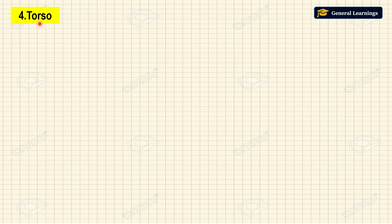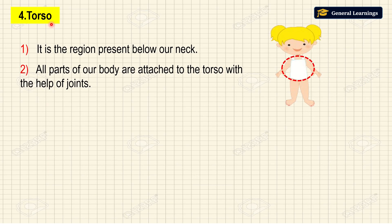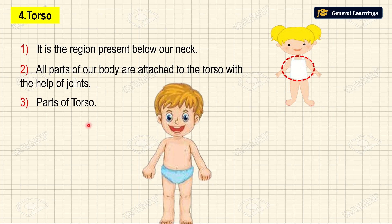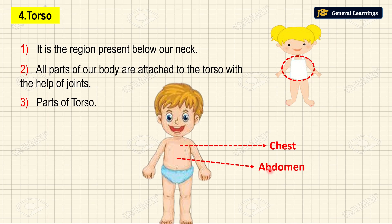Next we will see about the torso. It is the region present below our neck. All parts of our body are attached to the torso with the help of joints. Parts of the torso include: chest, abdomen, waist, and belly button.